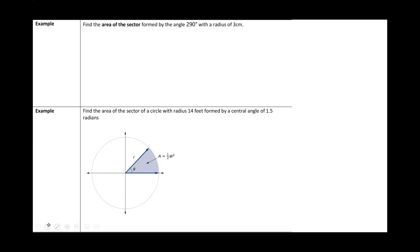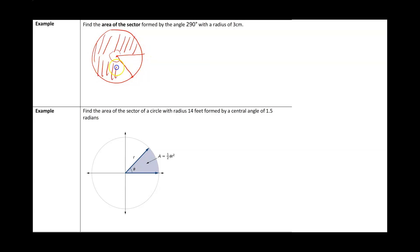Example: find the area of the sector formed by an angle of 290 degrees with a radius of 3 centimeters. To give a visual, starting from 0 degrees, going 90, 180, 270, 290 — that is our 290-degree angle. We want the area of the sector formed by that angle. So we set up our ratio: 290 degrees is to 360 as the area of the sector is to the area of the entire circle.